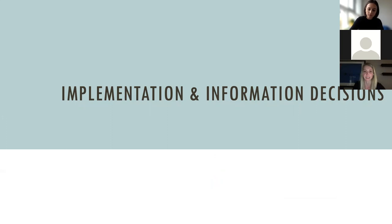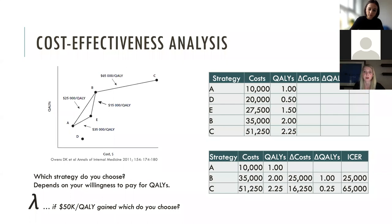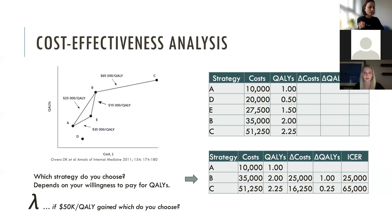Let's start with a brief overview of implementation and information decisions. Cost-effectiveness analysis involves several steps: we determine total expected discounted costs and benefits of each strategy, eliminate dominated strategies, compute incremental cost-effectiveness ratios for non-dominated strategies, and apply a willingness-to-pay threshold lambda. We choose the strategy with the highest ICER below that threshold. In our example, the cost-effective strategy is strategy B with an ICER of $25,000 per QALY.